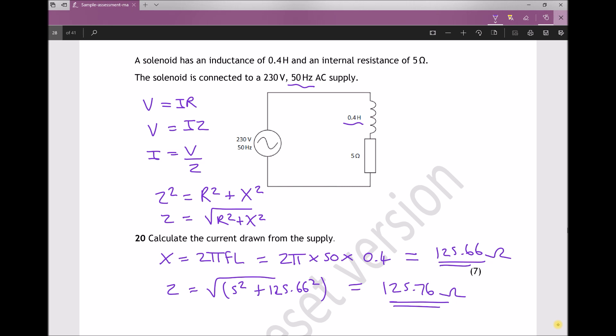Now finally we can calculate our current because we have our supply voltage, 230 volts there. So the current equals the voltage divided by the impedance. So 230 divided by our 125.76, giving us a current of 1.83 amps. And that's accurate to two decimal places. We know that the units here are amps because we've used SI units for both our impedance and our voltage.